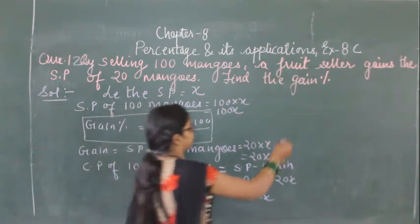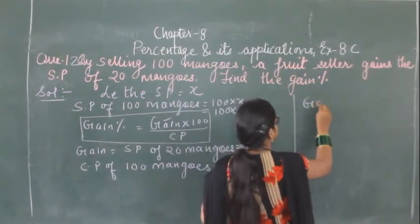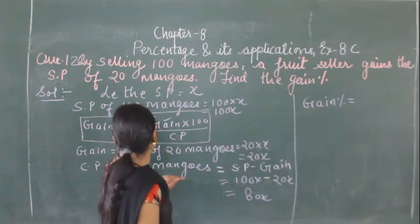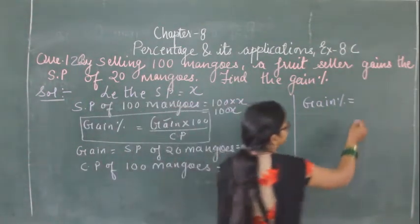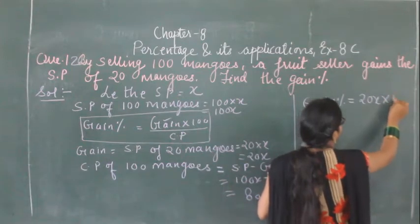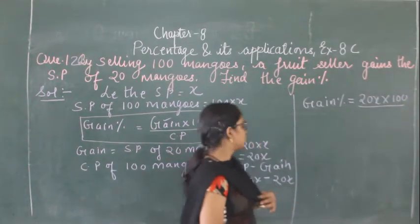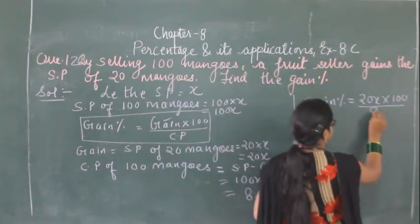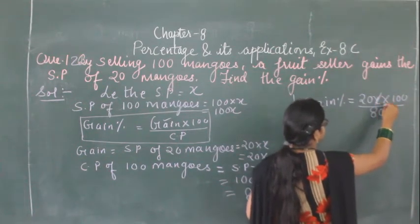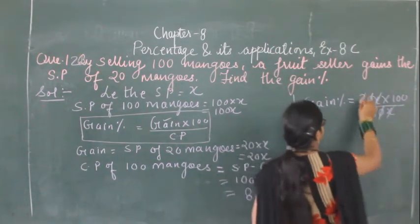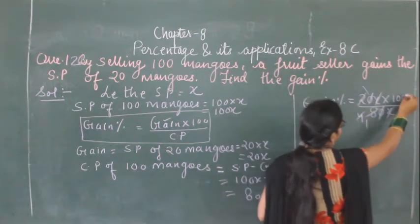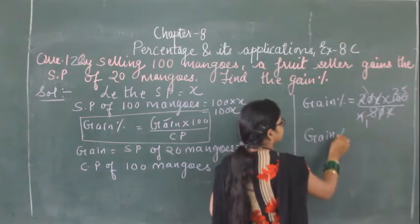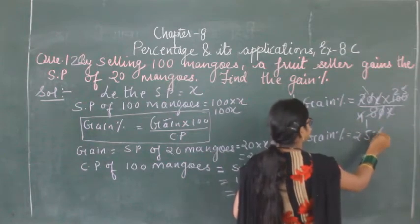Now we can find the gain percent. Gain percent equals gain into 100 upon cost price, that is 20X into 100 upon 80X. The X cancels, and simplifying we get gain percent equal to 25 percent.